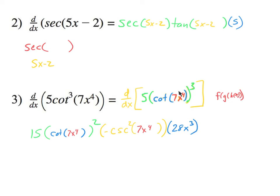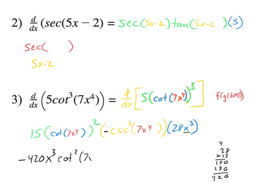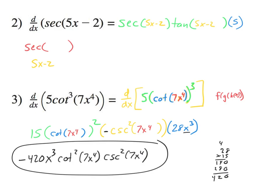You can see the multiple embedded pieces: you took the derivative of the green, left the inside, took the derivative of the inside — the yellow — left the inside, then took the derivative of the inside. Now we clean it up. There's a negative, and we have 28 times 15 which equals 420, so it's negative 420. Don't forget the x cubed. Then we have cotangent squared of 7x to the fourth, and cosecant squared of 7x to the fourth. That is your final derivative simplified out.